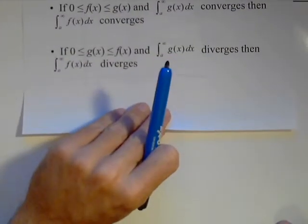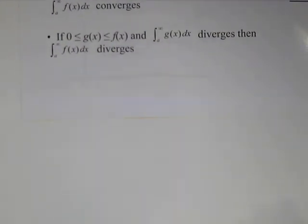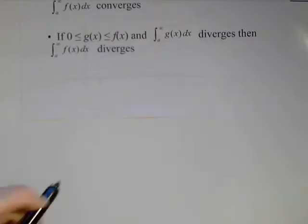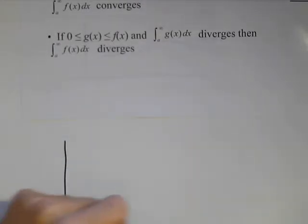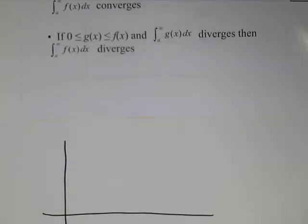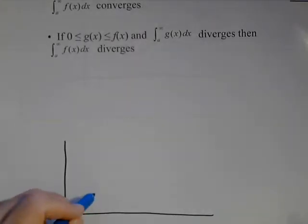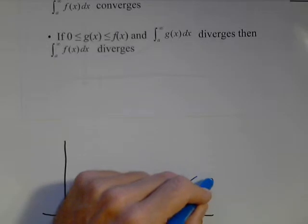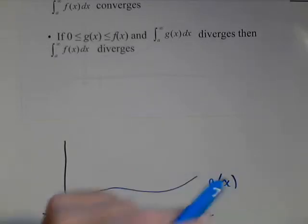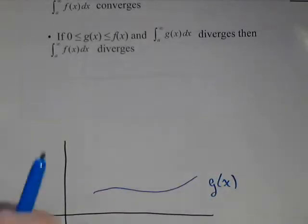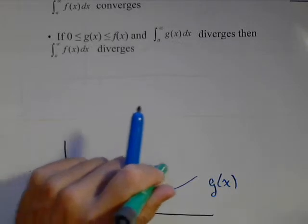Now, for divergence, it's a fairly similar idea and we'll use a very similar drawing. Now, in this case, g of x is the one we're using to test. So, there's g of x and f of x is now our larger function.